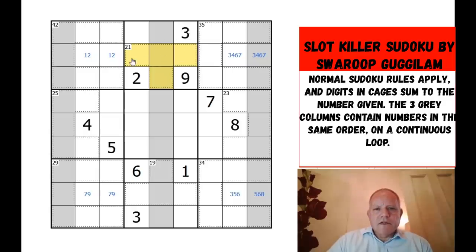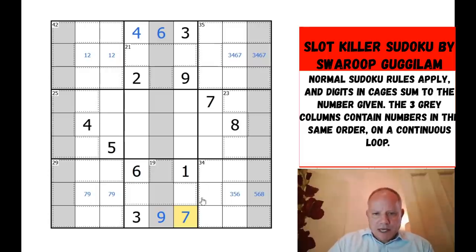Up here we have 21 in that shape, plus 9 is 30, plus those two is 35. These make 10. There are four combinations for 10 in two digits and three of them are impossible: 1 and 9 because there's already a 9 in the box, 2 and 8, 3 and 7. So this one is 4 and 6. Down here, symmetrically, 19 plus that is 29, that leaves 16 again, so this is 9 and 7.